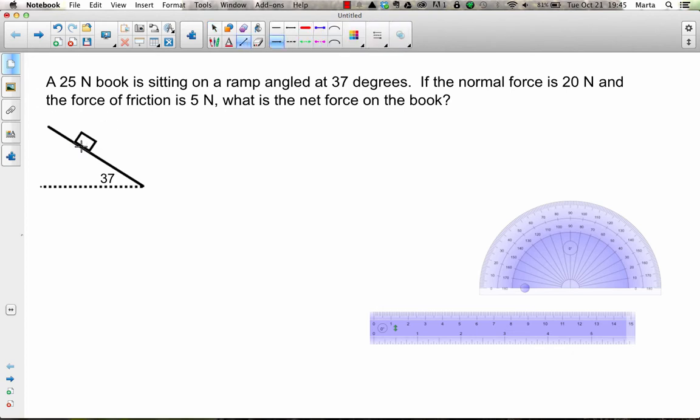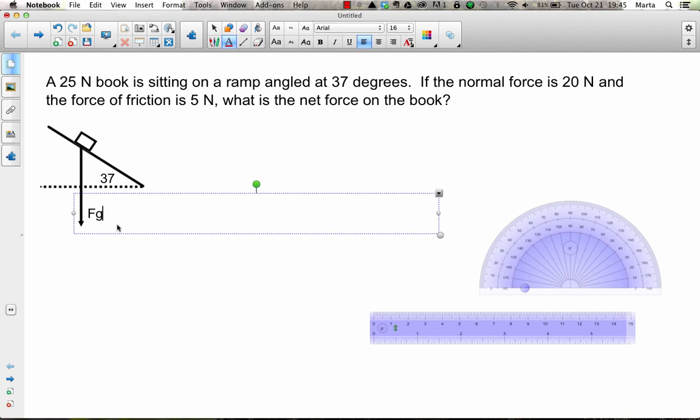And then I'll start adding the forces acting on that book. Gravity always acts straight down, so I'll do a nice straight arrow pointing downward, and I'll add a label for that that has the force of gravity, which is 25 newtons.